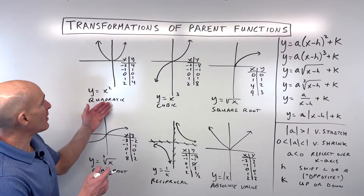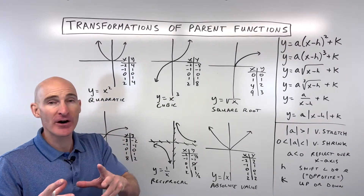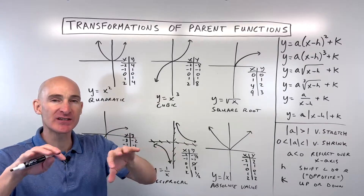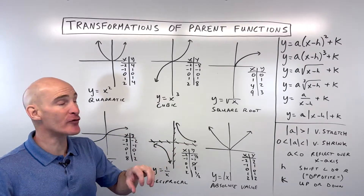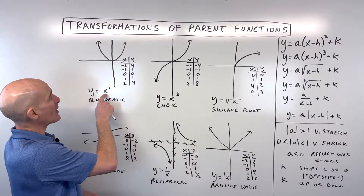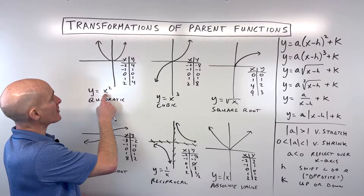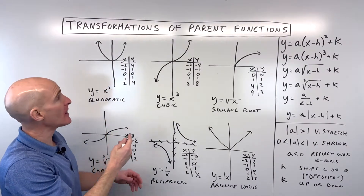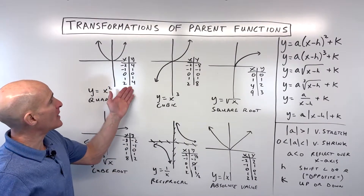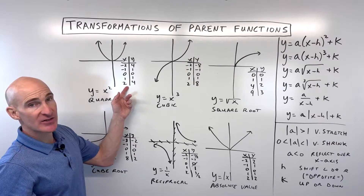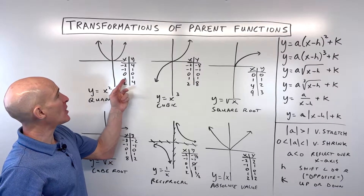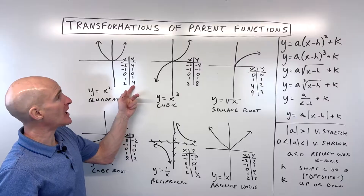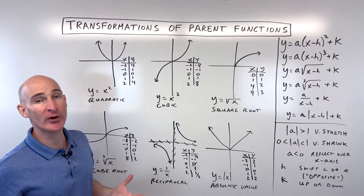A parent function is kind of like the core function when everything else is removed from it. If we think of y = x², we call that a quadratic, and it has this U-shaped graph — it's a parabola. You're going to want to know these key points. I'm picking small numbers and just squaring them to get the y values because they're easier to work with.